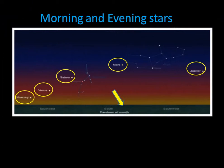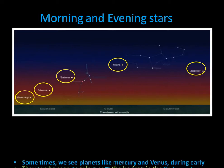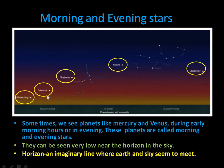Here is a picture of morning and evening stars. Remember, we are calling them stars but actually they are planets which we see. Sometimes planets like Mercury and Venus can be seen during early morning hours or in the evening, and because we can see them in morning or evening they are called morning stars or evening stars. We can see them very low near the horizon in the sky. The horizon is an imaginary line where the sky and the earth seem to meet.